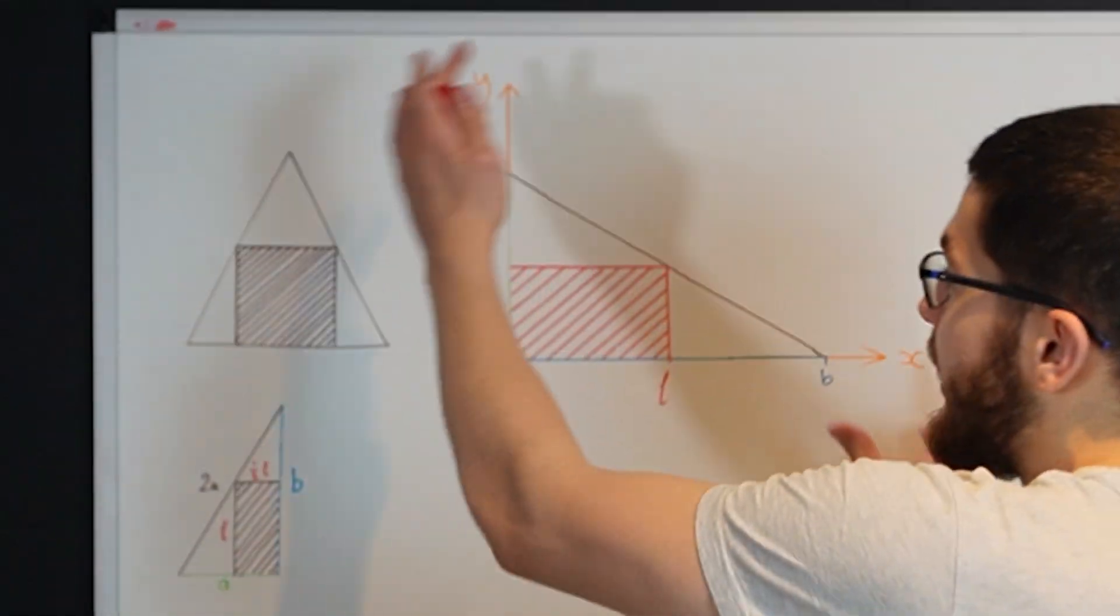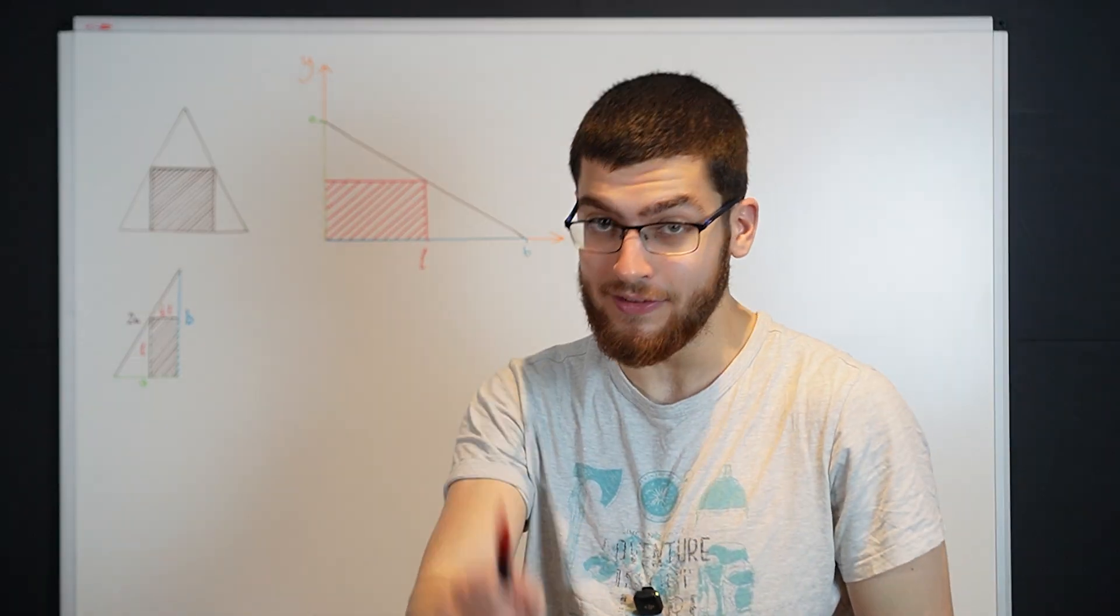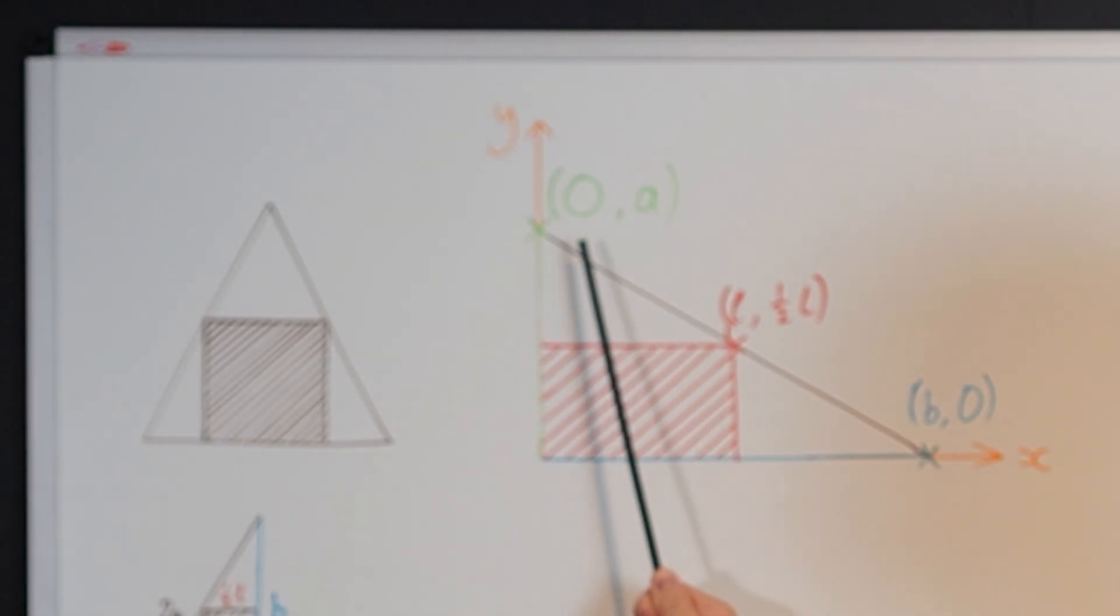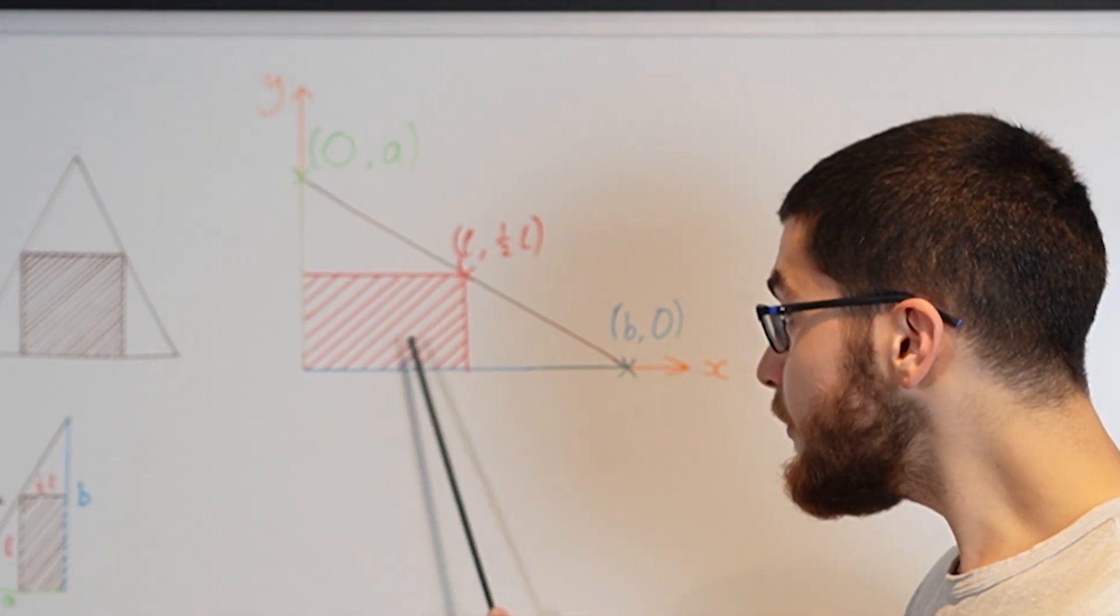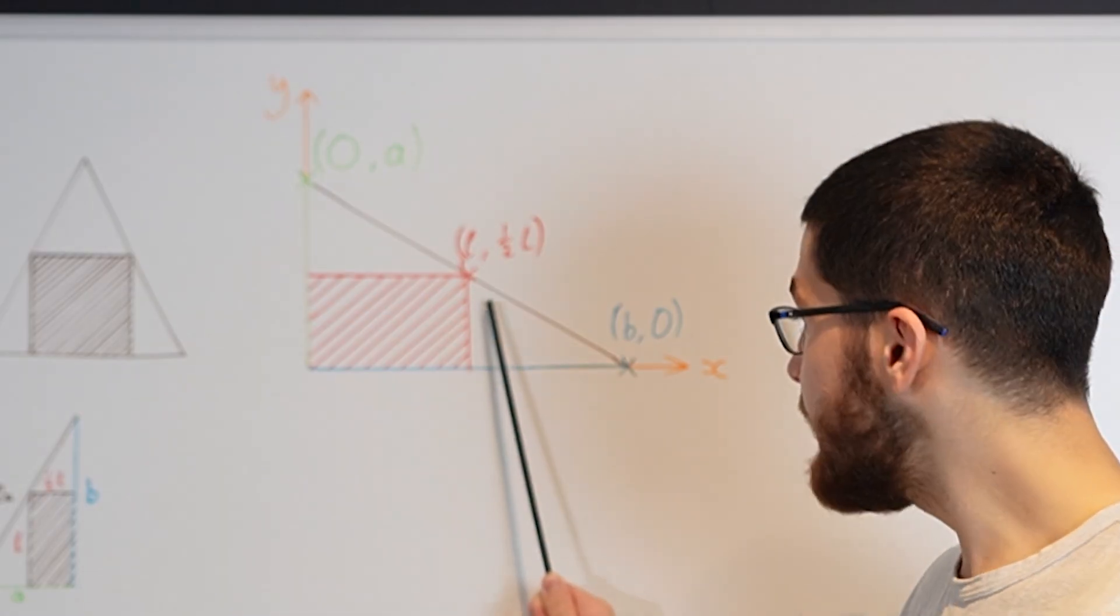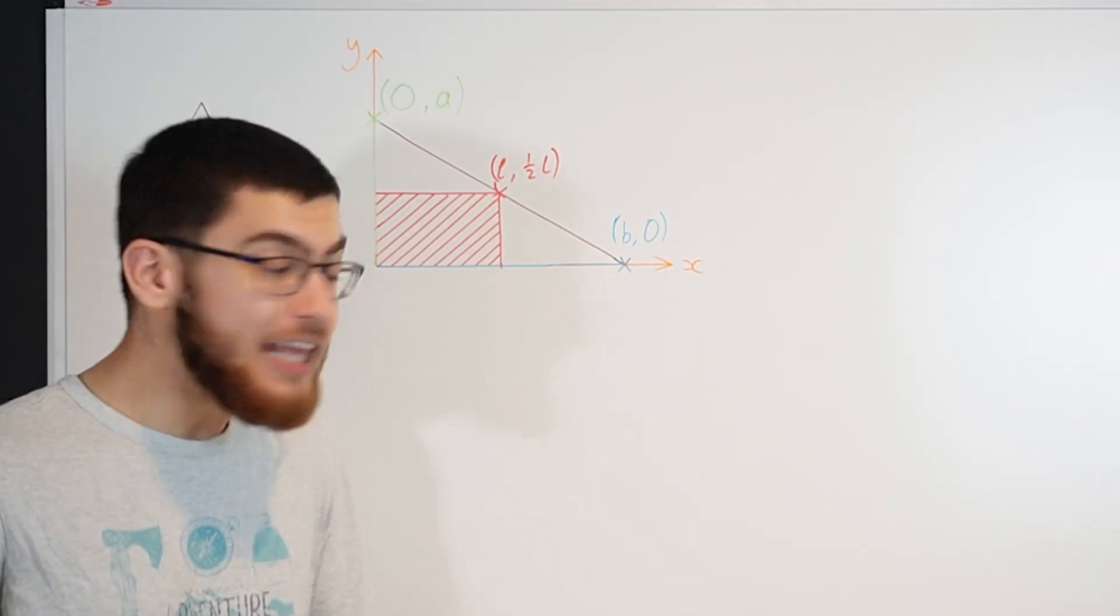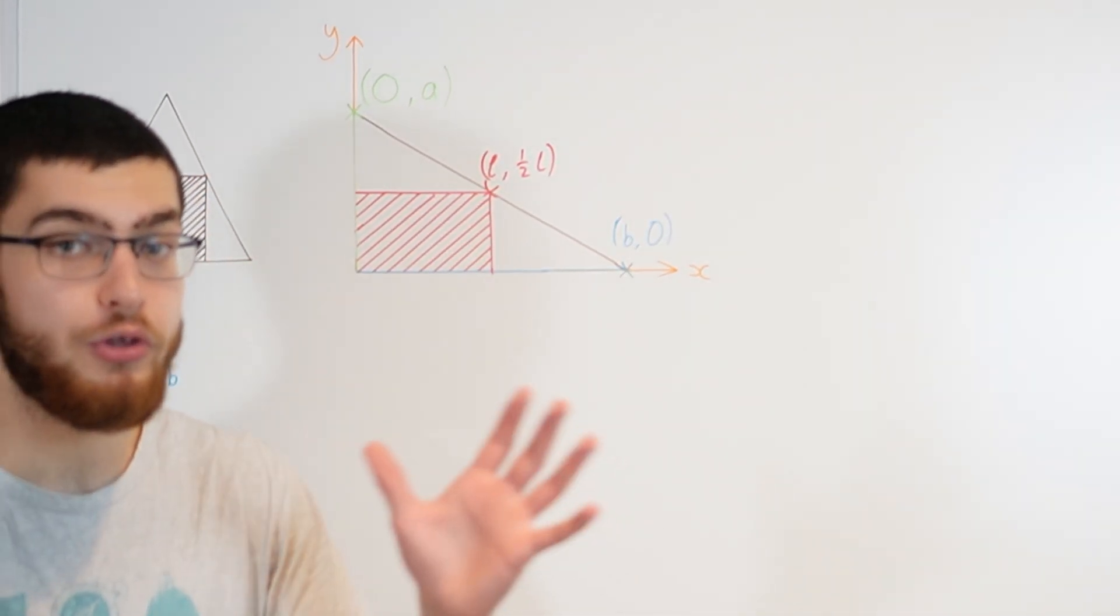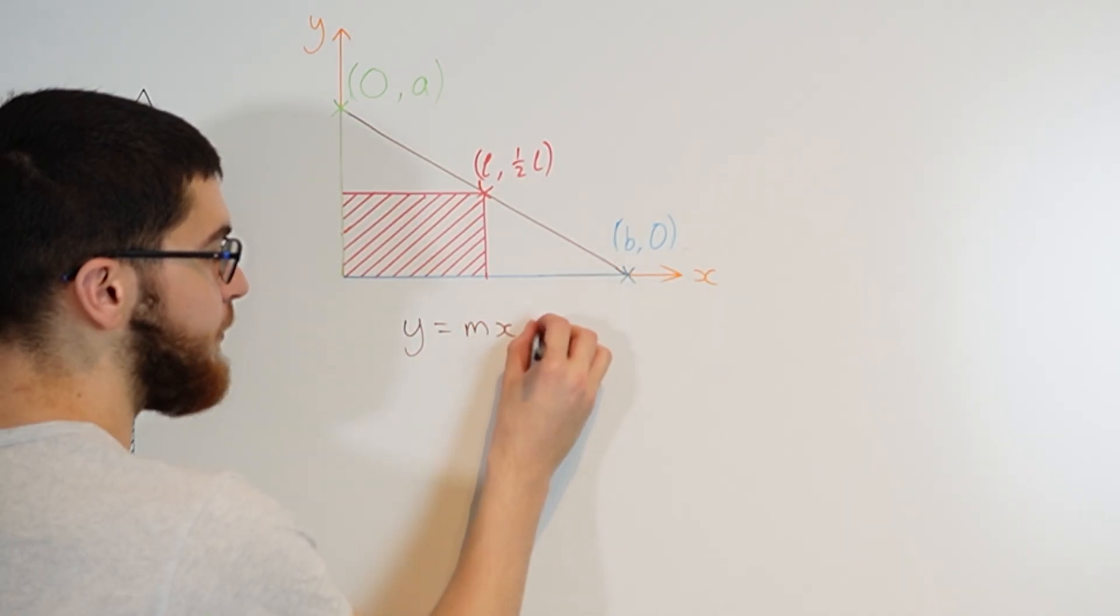So I've copied this right-angled triangle over onto an XY graph. This point on the graph is gonna be 0A. This point is gonna be at L and a half L, and this final point is gonna be at B0. You can see clearly that this forms a straight line and the graph for a straight line is Y equals MX plus B.